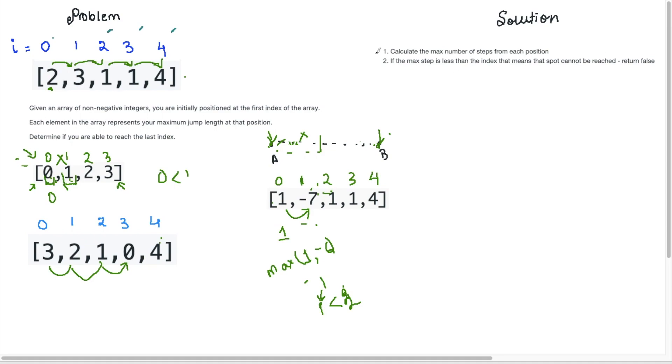So what we need to do in summary is calculate the max number of steps from each position. And this is to determine what is my maximum reach. And if my index is less than my maximum reach, then we already know that we can't reach that middle position. And therefore we can't reach the end. So that's the logic we're going to use.